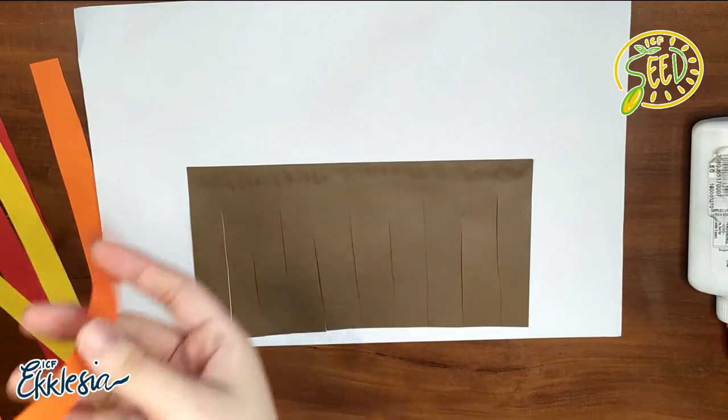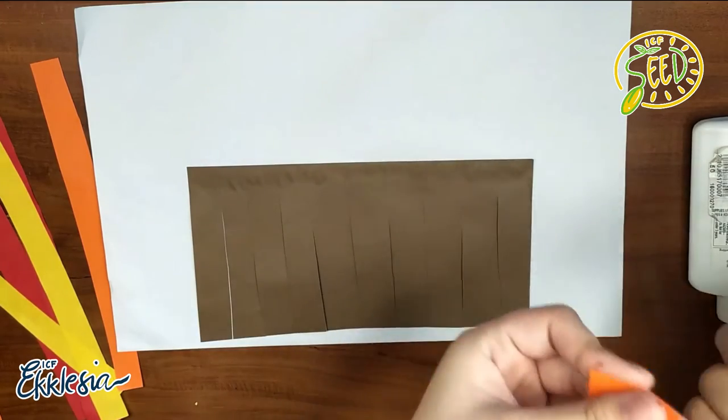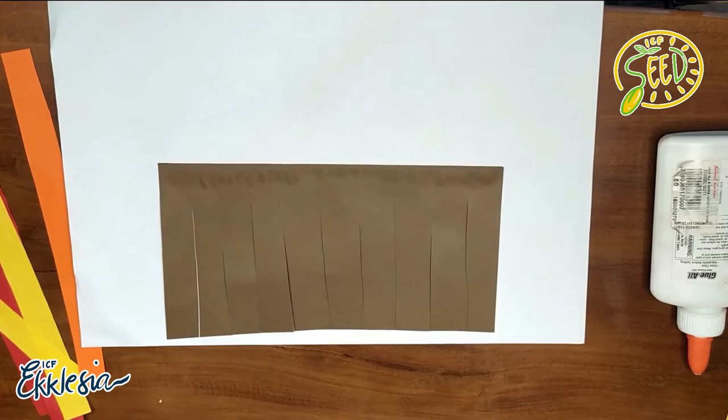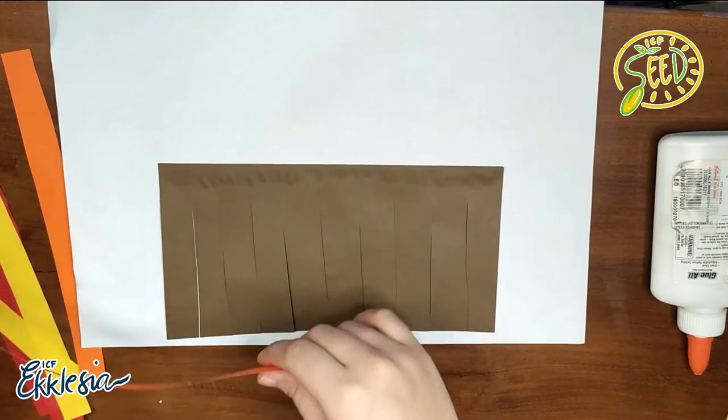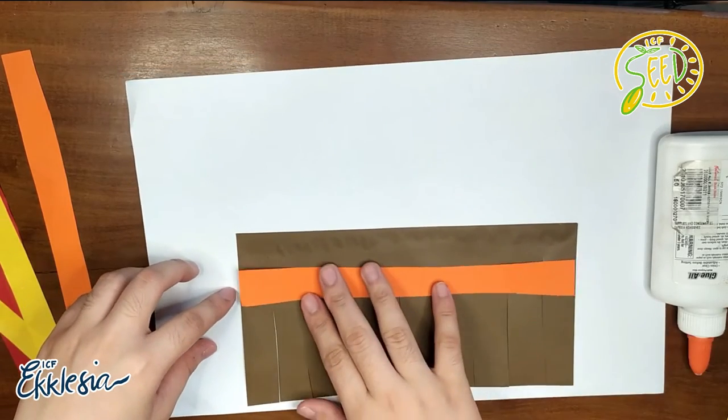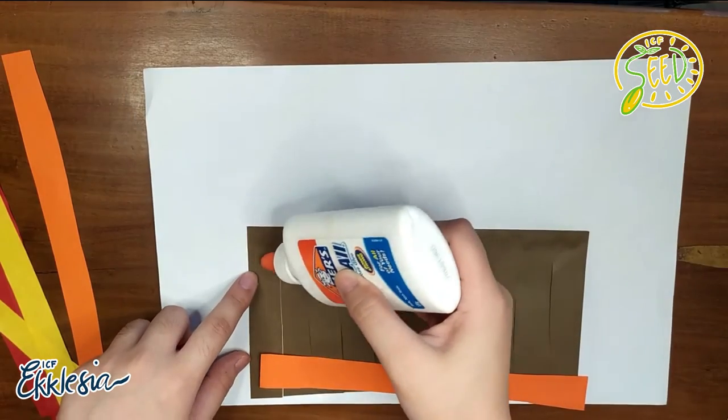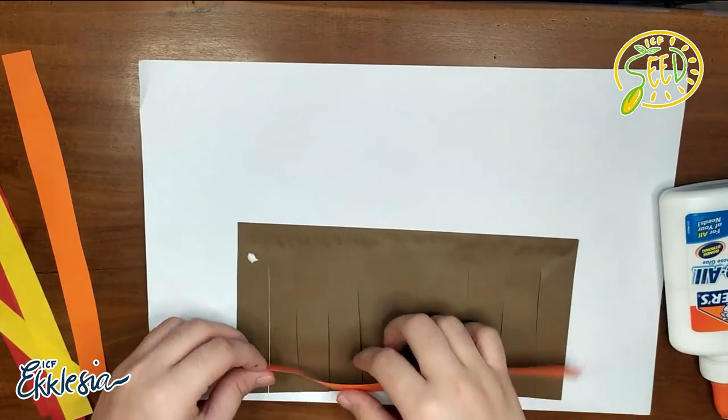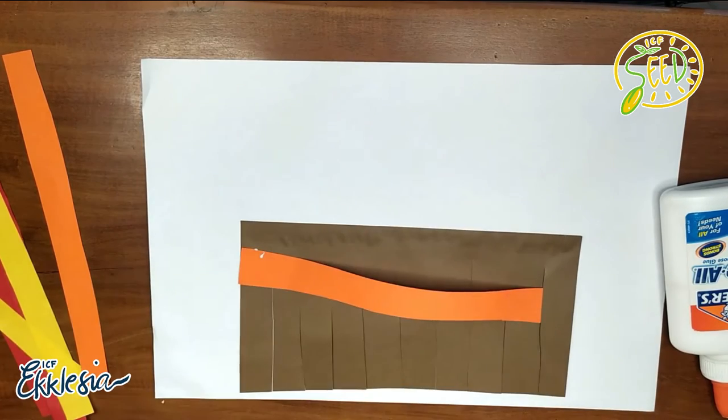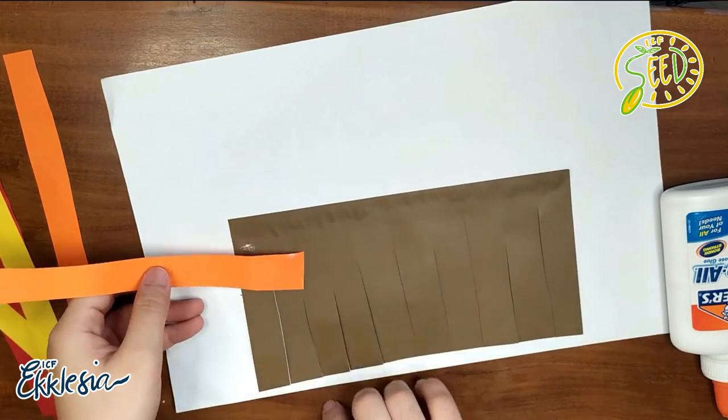Next. Ang gagawin natin ay Over, Under, Over, Under, Over, Under. First step. Lalagay natin dito, Over, dun sa first na flap or sa first na strip. Lagyan natin ang glue. Huwag kakalimutan lagyan ng glue para hindi ito matanggal again. At mag-iingat, dahan-dahan lamang.